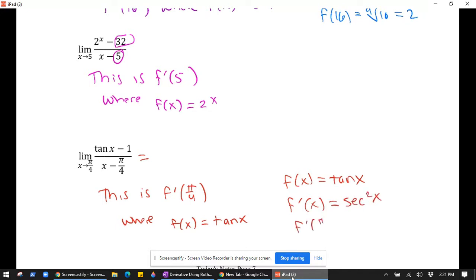like in a later part of your calculus experience, you'll learn that its derivative is secant squared. And then when you plug in pi over 4, you'll get that this is secant squared of pi over 4. And the secant of 45 degrees is root 2. Root 2 squared is 2. So this limit is going to equal 2.